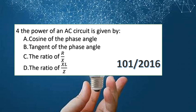The power factor of an AC circuit is given by which of the following? Option A is cosine of the phase angle, option B is tangent of the phase angle, option C is the ratio of R by X, option D is the ratio of XL by Z. The answer is option A: cosine of the phase angle.